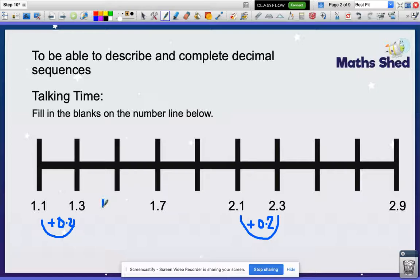So the rule for this sequence is that it's going up, adding on 2 tenths each time, which is the same as 0.2. So this then would be 1.5, 1.7, 1.9. Let's check: 2.1, 2.3, 2.5, 2.7, and 2.9.